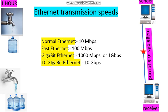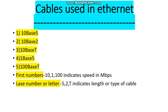In Ethernet we can use cables like 10BaseT, 10Base5, 10Base2, 1Base5, and 100BaseT. Here the first numbers, such as 10 and 100, indicate the data rate in Mbps, and the last numbers or letters, such as 2, 5, and T, indicate additional cable characteristics.